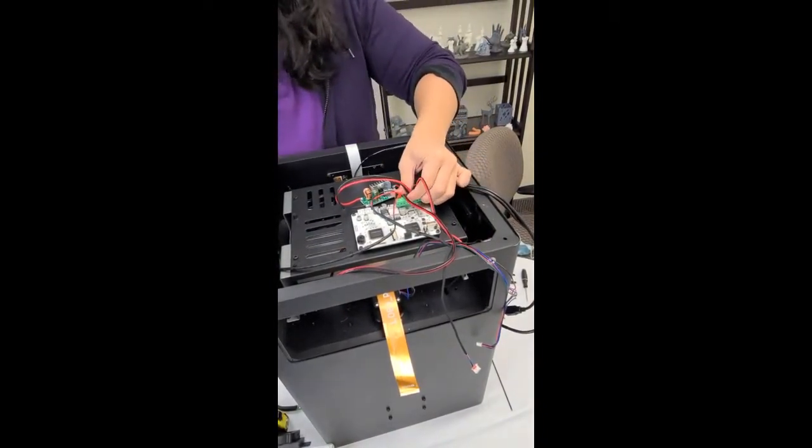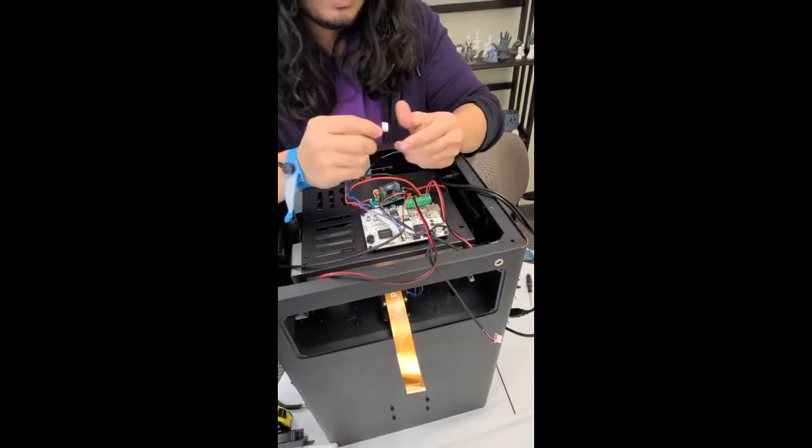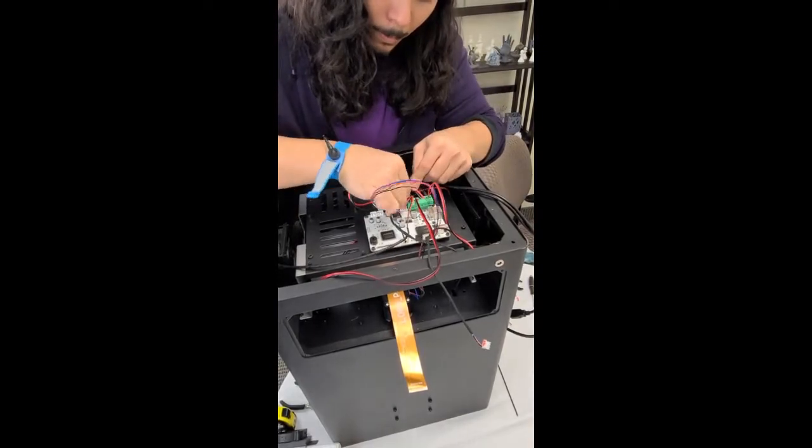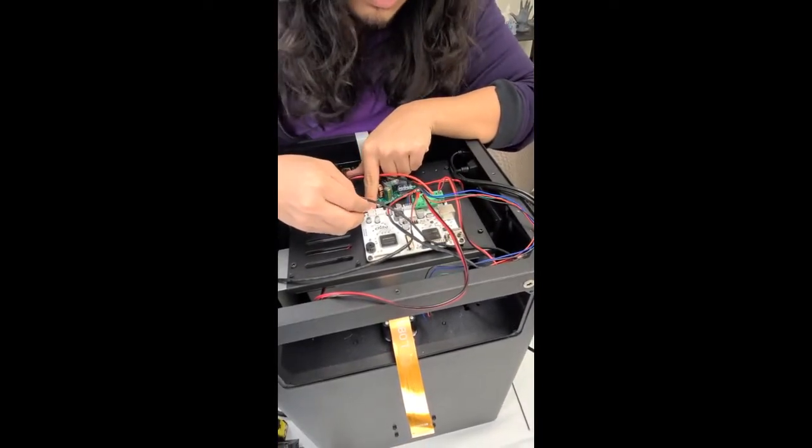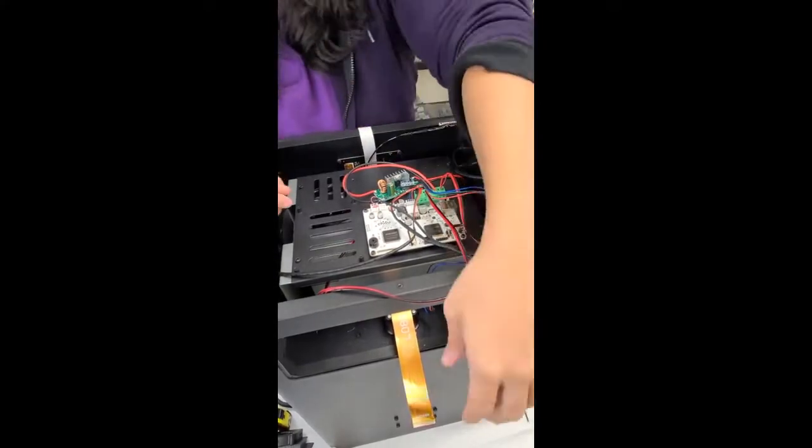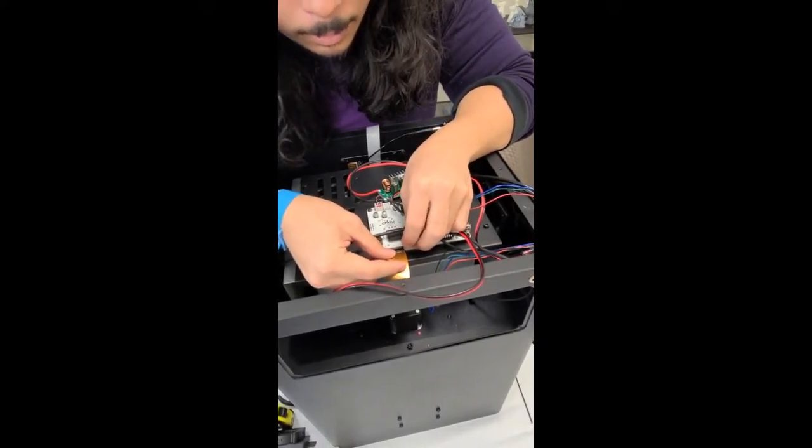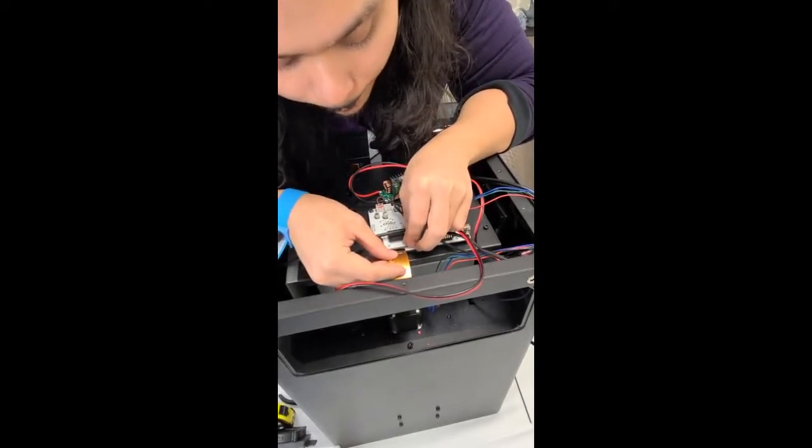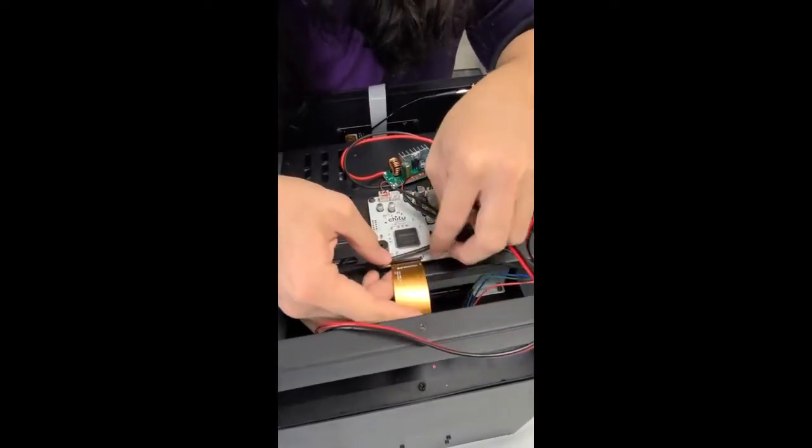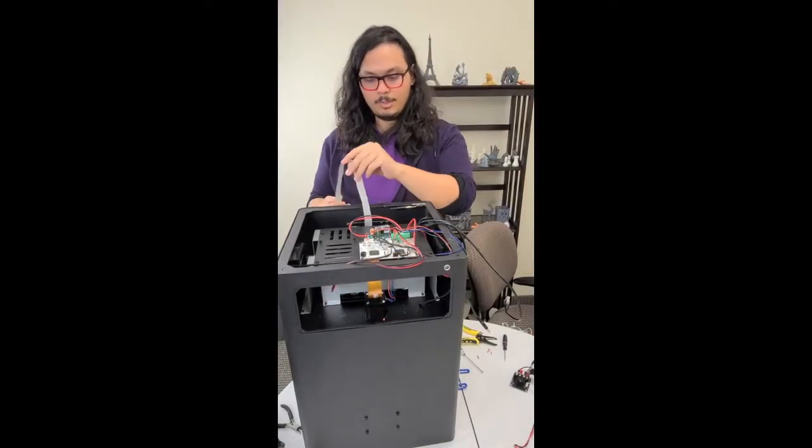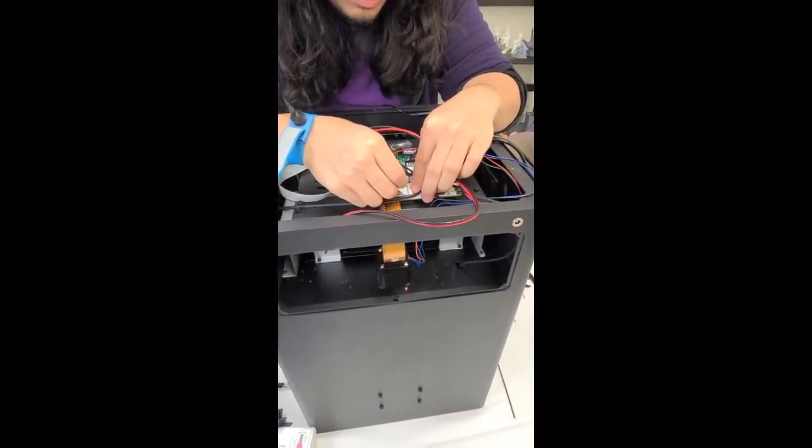Now all we have to do left is to connect the remaining connectors. So Z motor, four pin connection, goes in this terminal here. And then our optical switch, the three prong connection, goes into the negative Z terminal on this side here. Then we have our screen cable. This is a bit tough. There we go. Just pull that down. And next up, we'll just reconnect the touchscreen cable here, go in this port here. Make sure it slides in all the way. It can be a bit tricky.